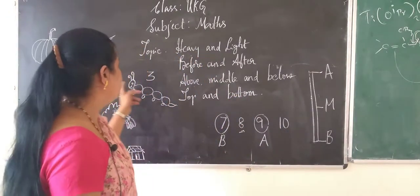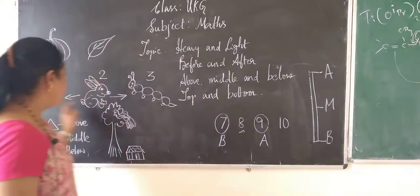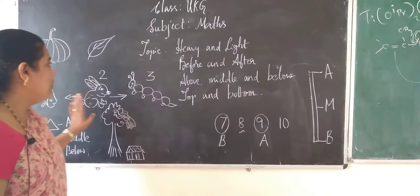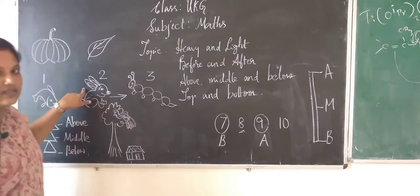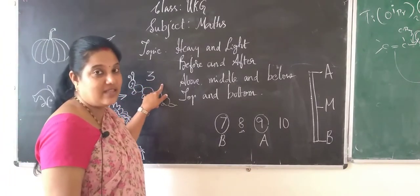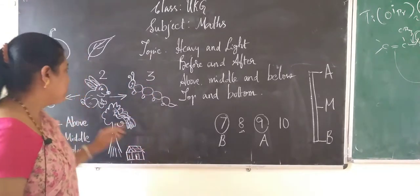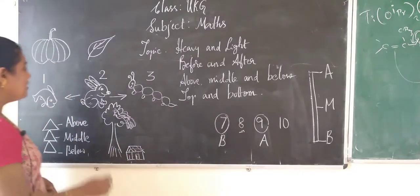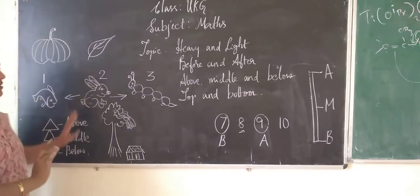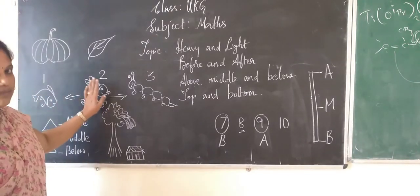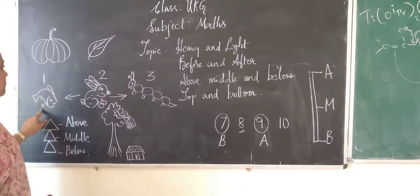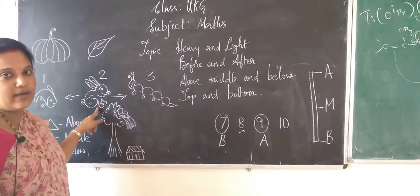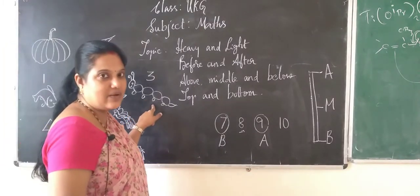Now let's see 'before and after.' Can you see some pictures here? This is a fish, this is a rabbit, and this is a caterpillar. Fish is in the first position, rabbit is in the second position, and caterpillar is in the third position. The rabbit is in the middle. Fish is before rabbit, and after rabbit comes the caterpillar.